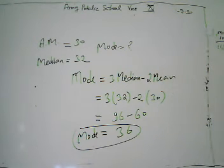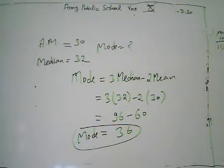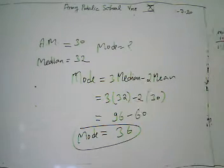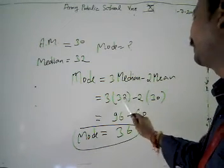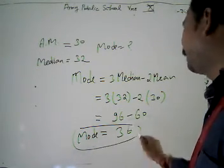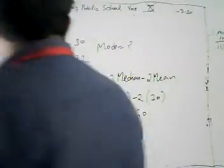Let us verify: it is given that in an asymmetrical distribution, the arithmetic mean and median are respectively 30 and 32. Mean = 30, Median = 32. We use the formula Mode = 3 Median − 2 Mean = 3 × 32 − 2 × 30 = 96 − 60 = 36. Our mode is 36. Now we are going to take the next problem.